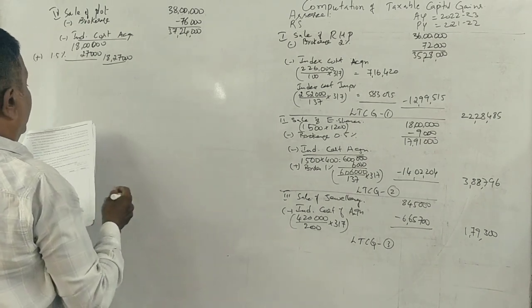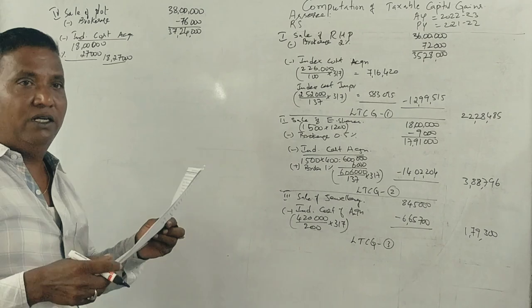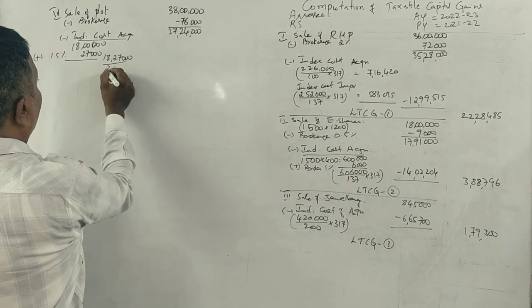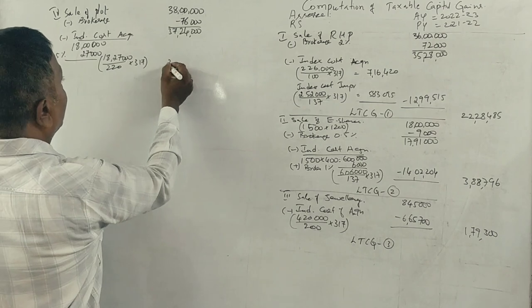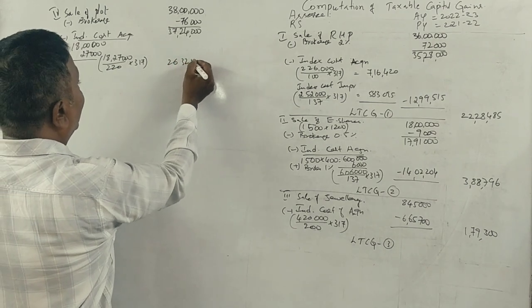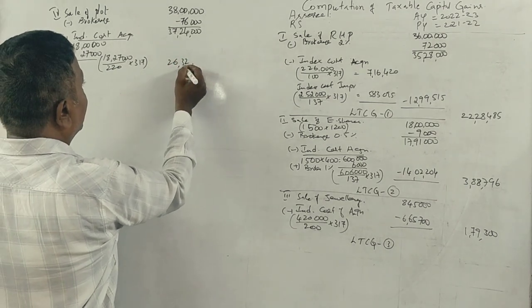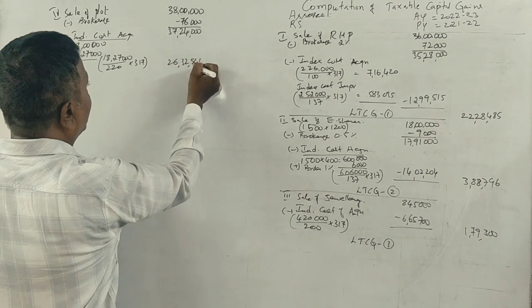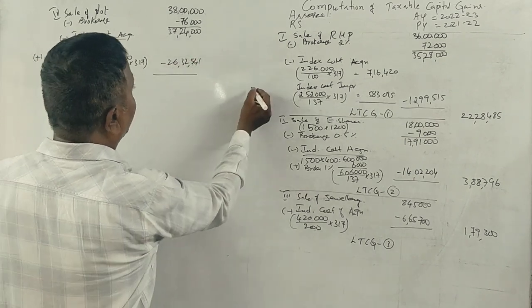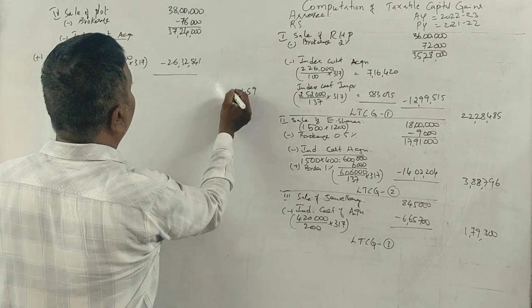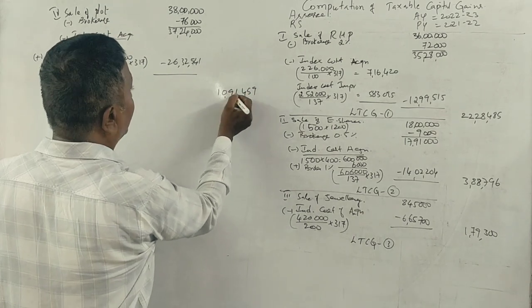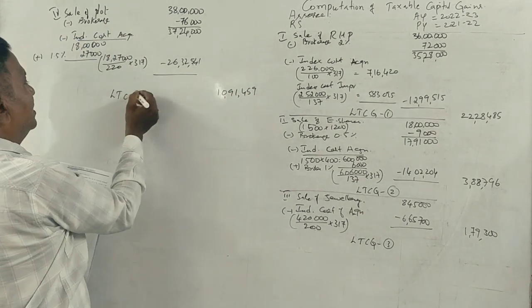This calculation gives us the indexed cost. After completing the calculation, this is LTCG number 4.